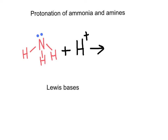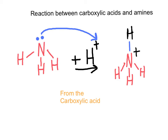Nitrogen always has a lone pair of electrons making three bonds. Amines are weak bases because they can abstract a proton from acids, becoming a positively charged nitrogen. So the reaction between a carboxylic acid and ammonia is simply a protonation, where the proton comes from the carboxylic acid to produce an ammonium salt.